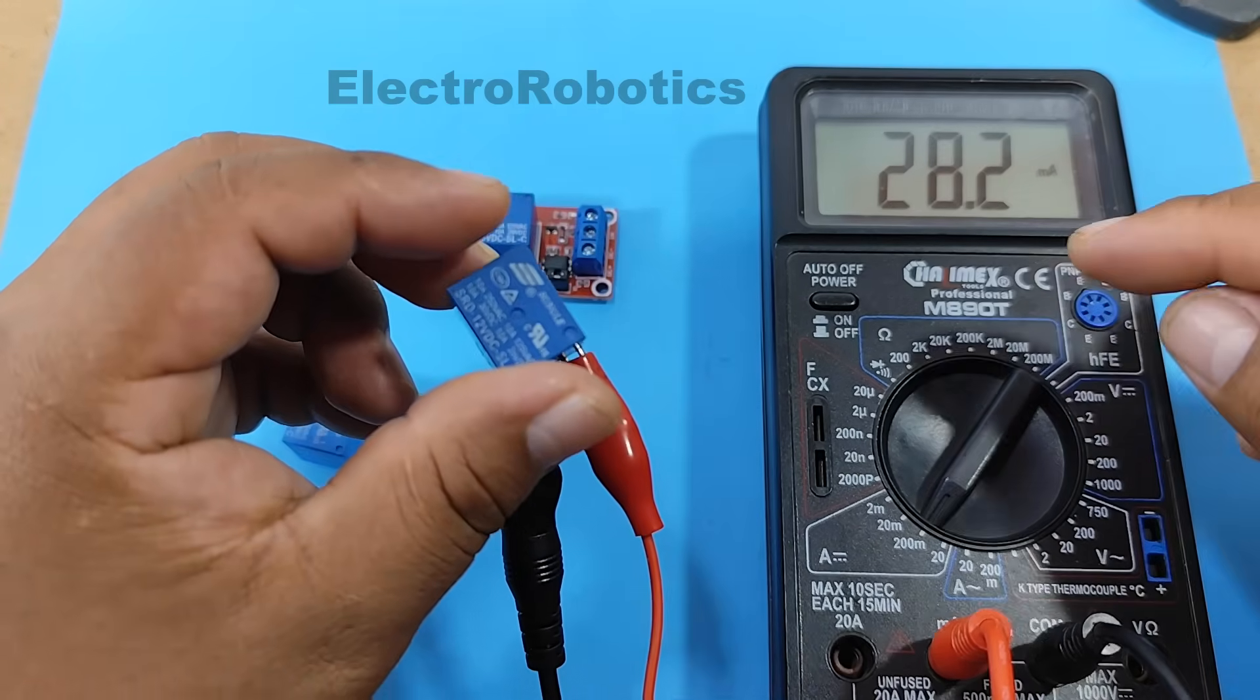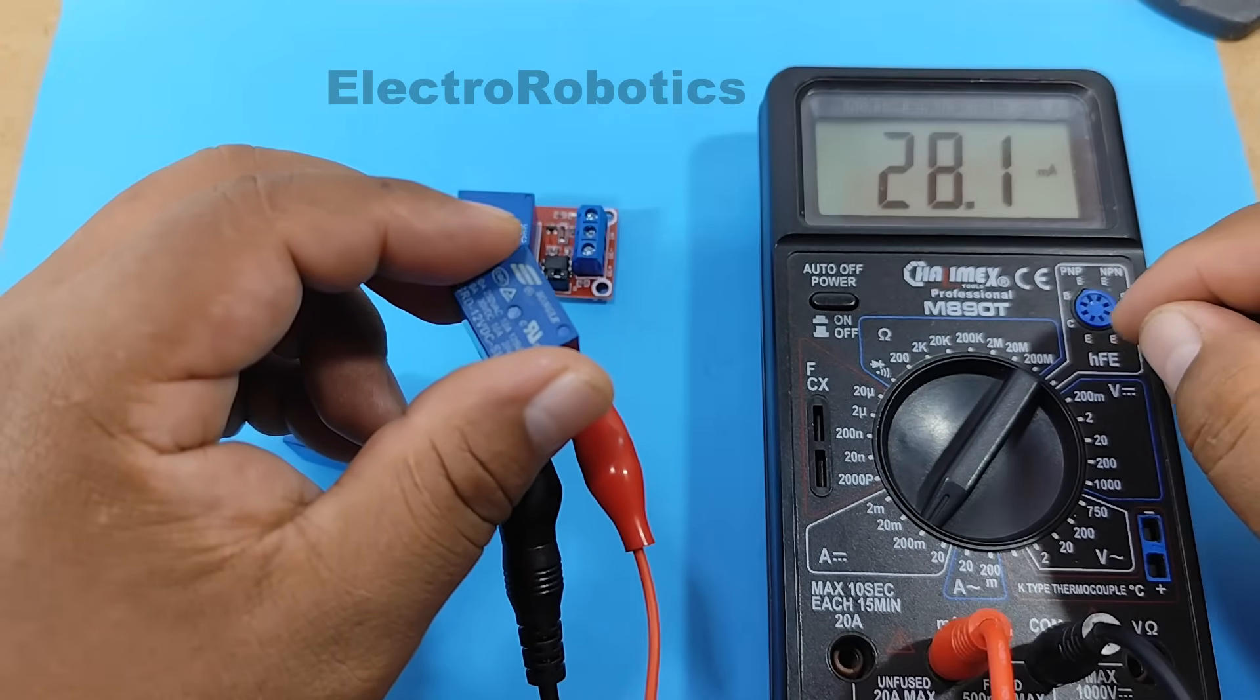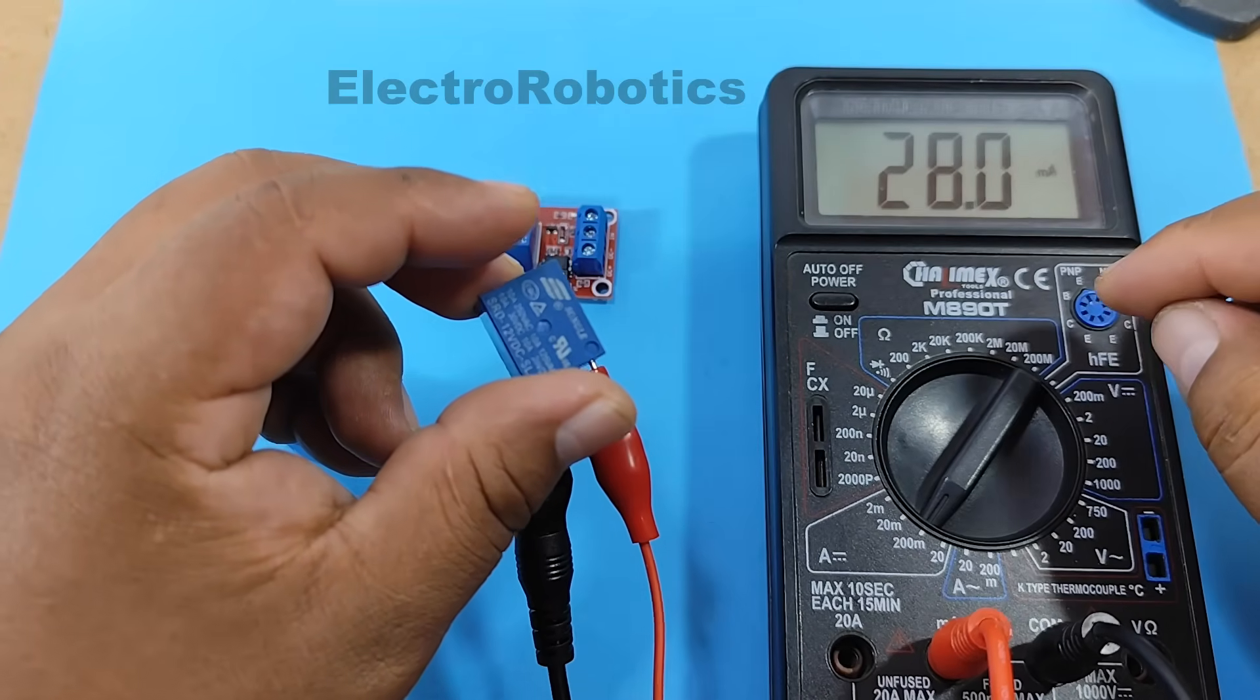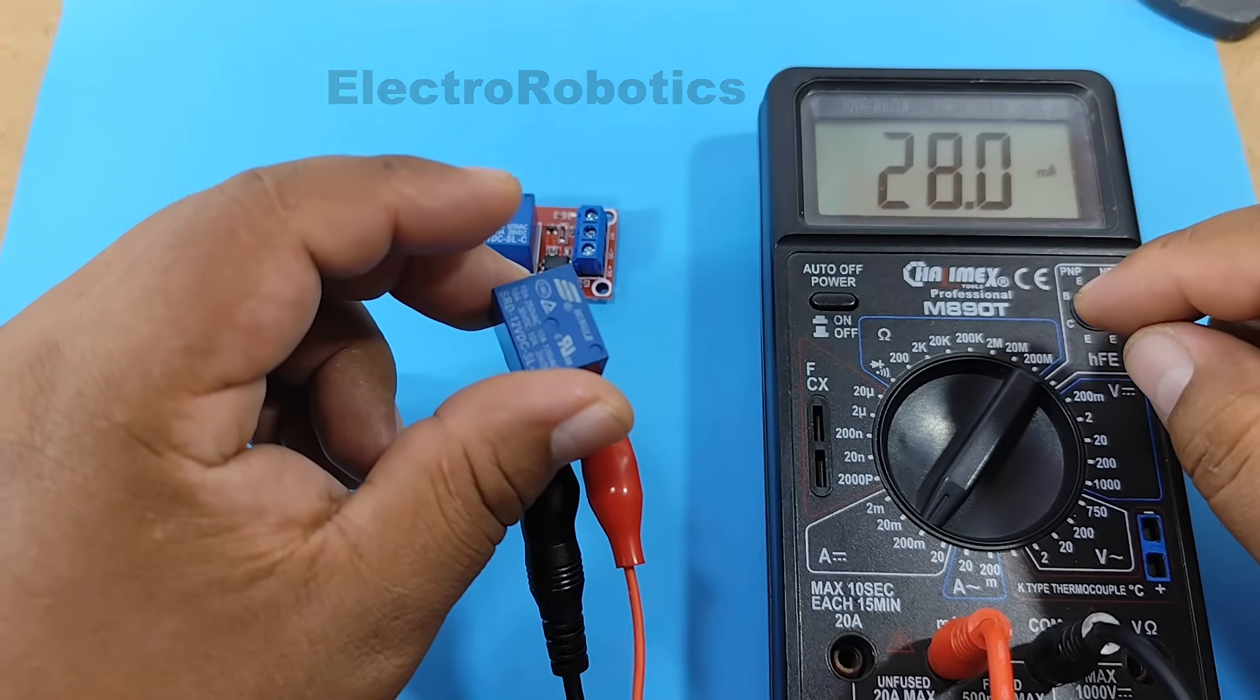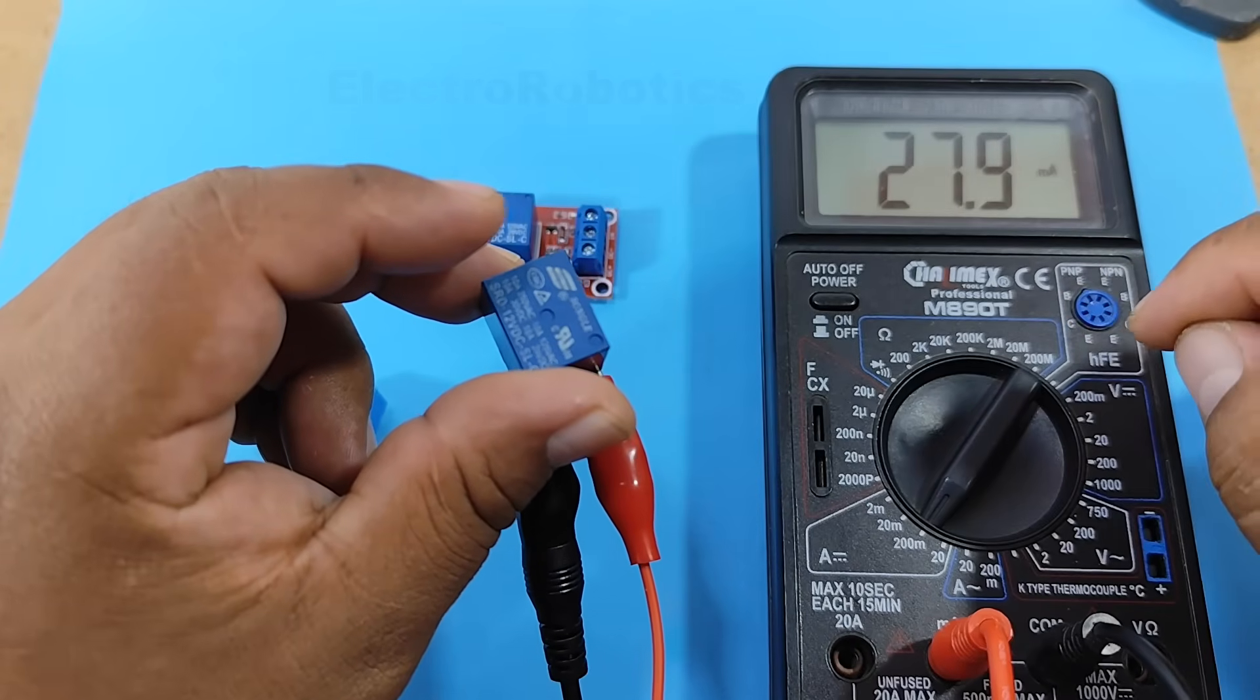Therefore, the 12 volt relay has a lower current consumption, making it more convenient to use in our project. With that cleared up, let's move on to the next step.